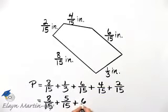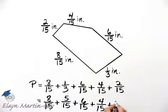And then let me rewrite the rest. 6 over 15, plus 4 over 15, plus 2 over 15.